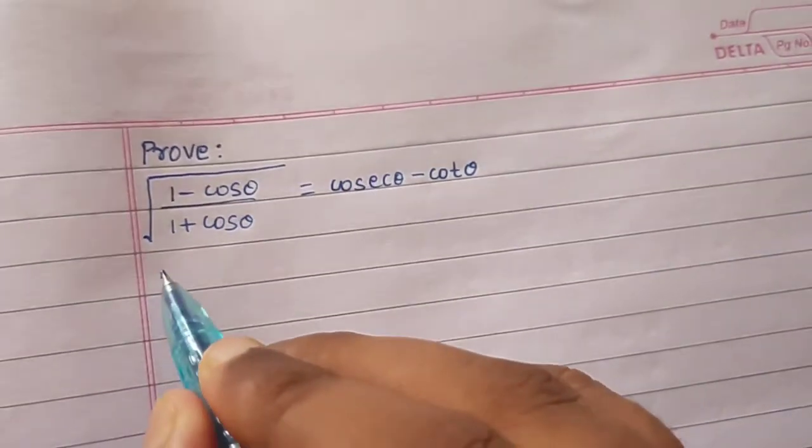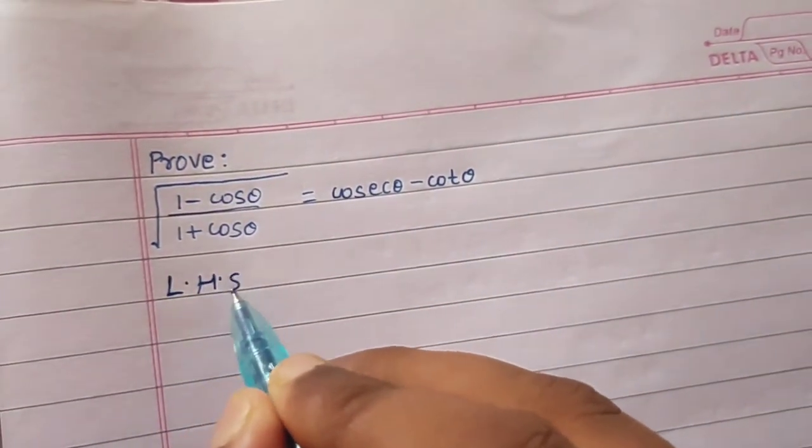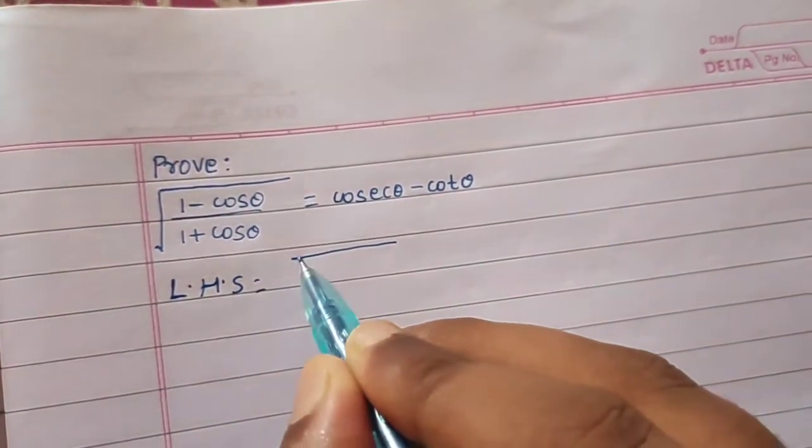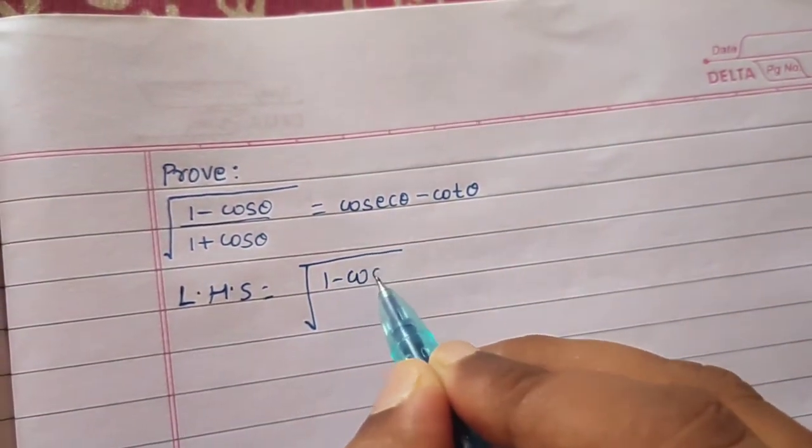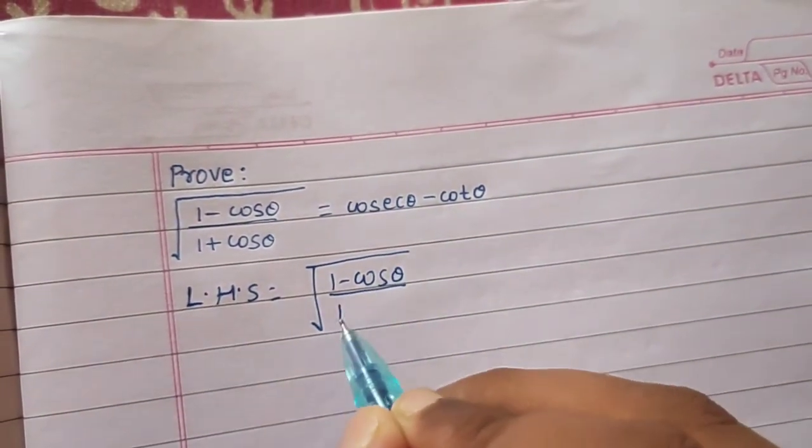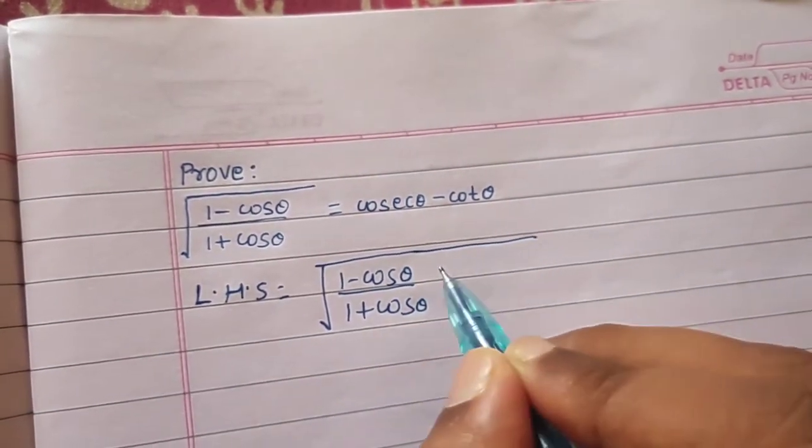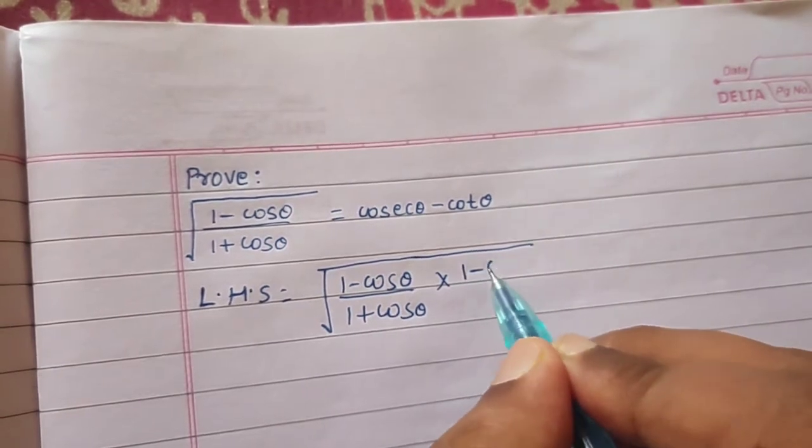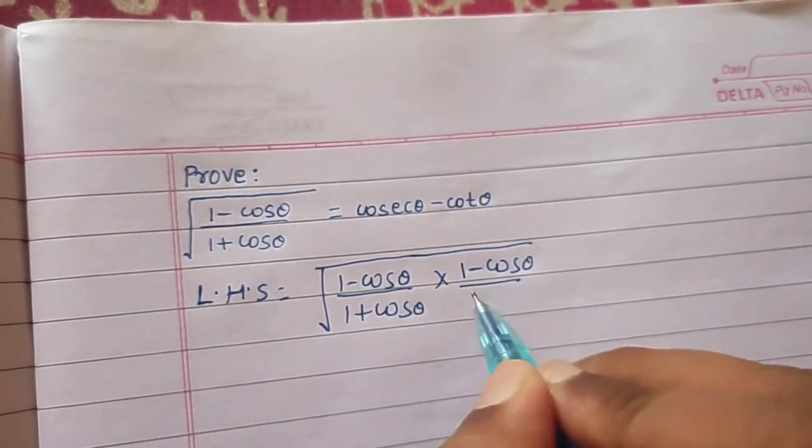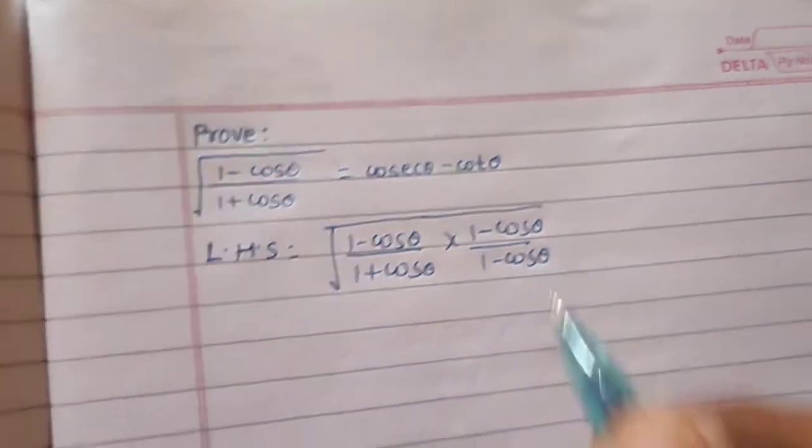So LHS is the square root of 1 minus cos theta divided by 1 plus cos theta. We can rationalize it by multiplying and dividing by 1 minus cos theta.